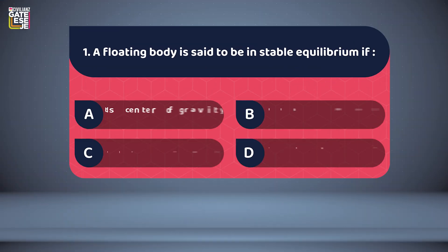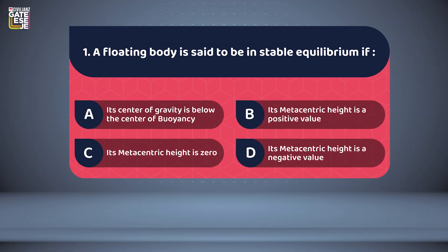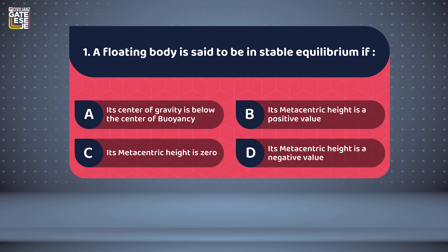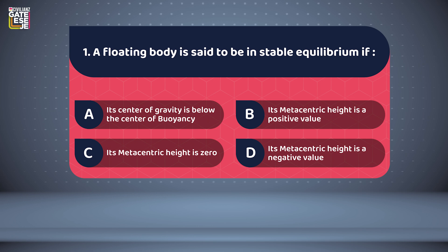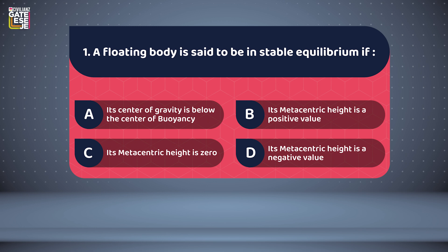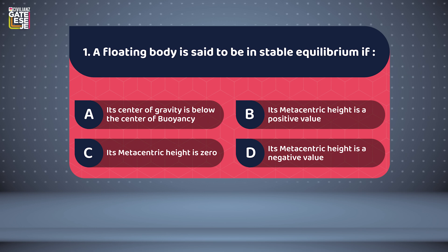Question 1: A floating body is said to be in stable equilibrium if — Option A: its center of gravity is below the center of buoyancy; Option B: its metacentric height is a positive value; Option C: its metacentric height is zero; Option D: its metacentric height is a negative value.